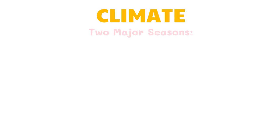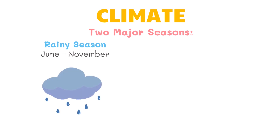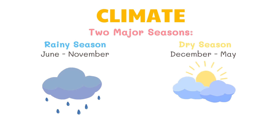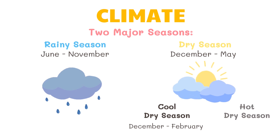Using these elements, the climate of the Philippines can be divided into two major seasons: the rainy season from June to November, and the dry season from December to May. The dry season can be further subdivided into the cold dry season from December to February and the hot dry season from March to May.